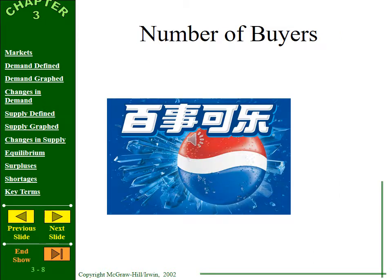Number of buyers works the same way. If there's an increase in the number of buyers — like the Chinese market for Pepsi — demand goes up, and price and quantity rise. If there's a decrease in the number of buyers, demand goes down, and price and quantity fall.